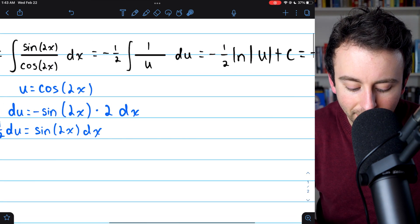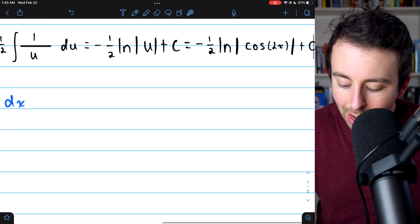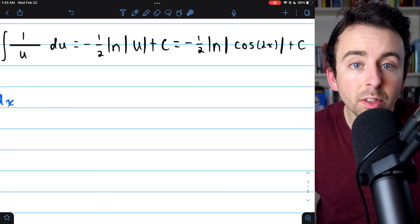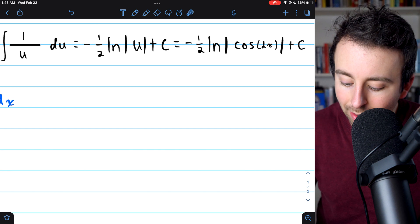So then replacing u with what we set it equal to, cosine of 2x, we get negative half the natural log of the absolute value of cosine of 2x plus c.